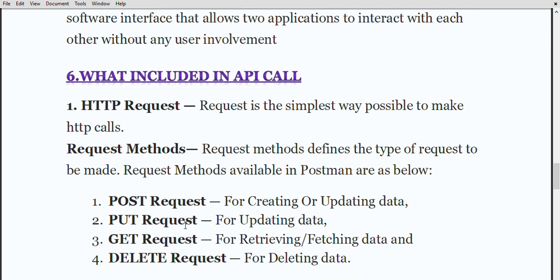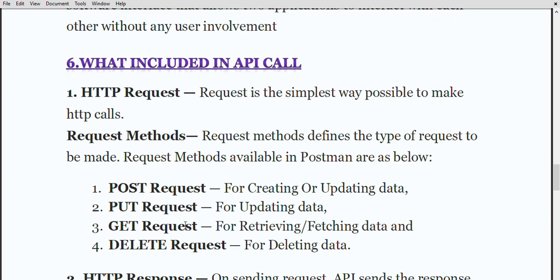Then the main question is: what is included in an API call? As we have seen in API testing, an HTTP request is sent to a web server and we take a response from it and check the output. An API call generally includes two parts: HTTP request and HTTP response. An HTTP request is the simplest way to make HTTP calls — I want something from a web server, so I need to send a request. There is a specific format you need to follow, known as the HTTP request. The requesting method defines the type of request — what you actually want.